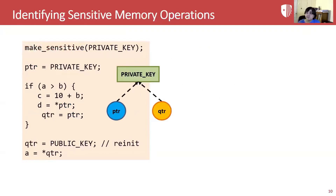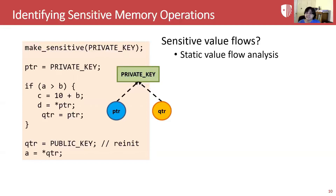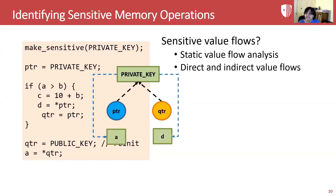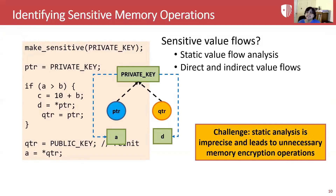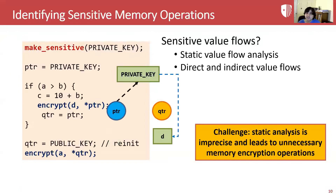After resolving which pointers can point to sensitive data, we statically compute which value flows in the program are sensitive, including both direct and indirect values. During our static analysis stage, results will still have some imprecision. Using these results directly to instrument the program will lead to unnecessary memory encryption and decryption operations. For example, even though only the value flow from the private key to variable D is sensitive in reality, static analysis concludes that the private key can flow to both variable A and D, leading to unnecessary memory encryption operations as shown in this figure.